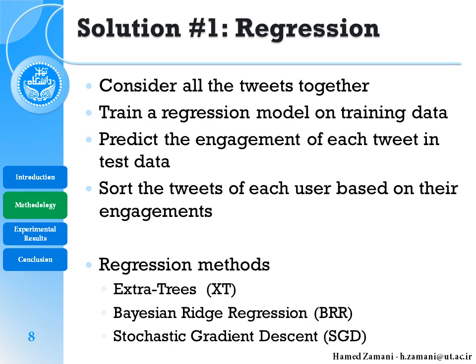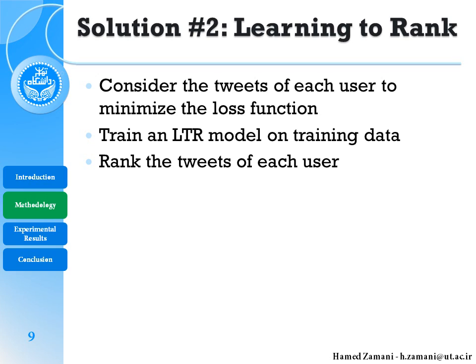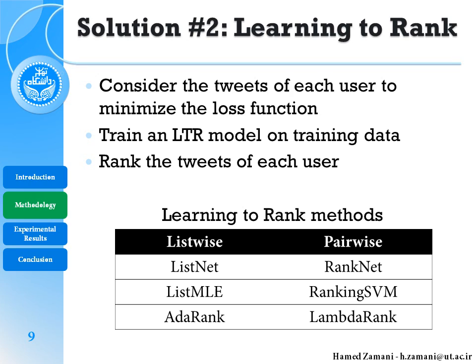In the second solution we use the learning-to-rank approach, which considers the tweets of each user and tries to minimize the loss function. We train a learning-to-rank model on the training data and rank the tweets of each user without accessing the exact engagement. We use six different learning-to-rank methods: three listwise and three pairwise, which you can see in the slide.